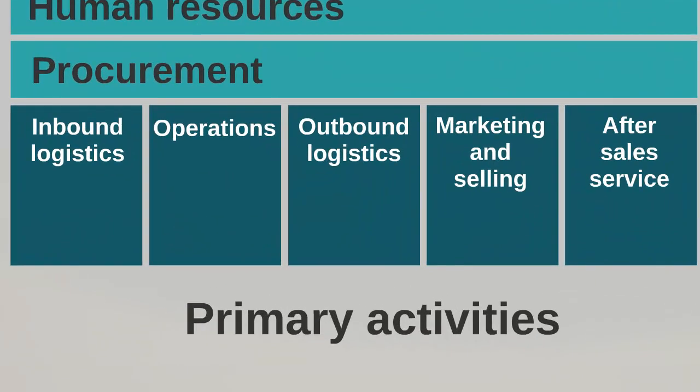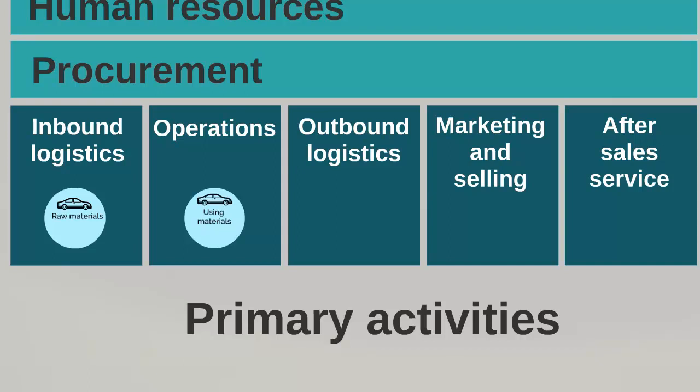So let's look at these more closely using an example — let's say we have a car company. For inbound logistics, that would be the raw materials: the raw steel and raw components to make the cars. Operations covers how they use that material and the quality of the production line — how well they put the cars together, how efficient the production line is, and how developed the automation and mechanics involved are.